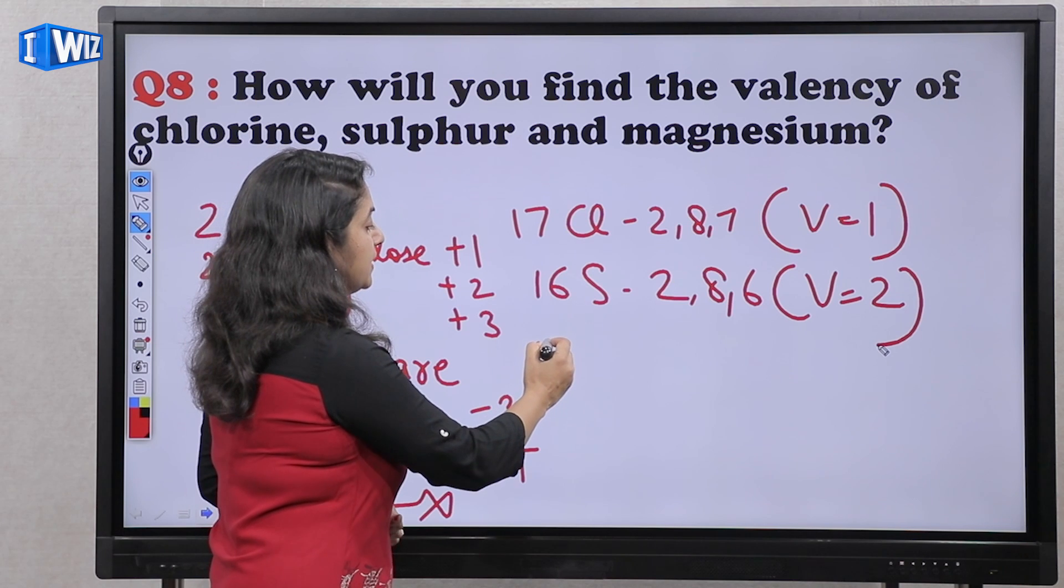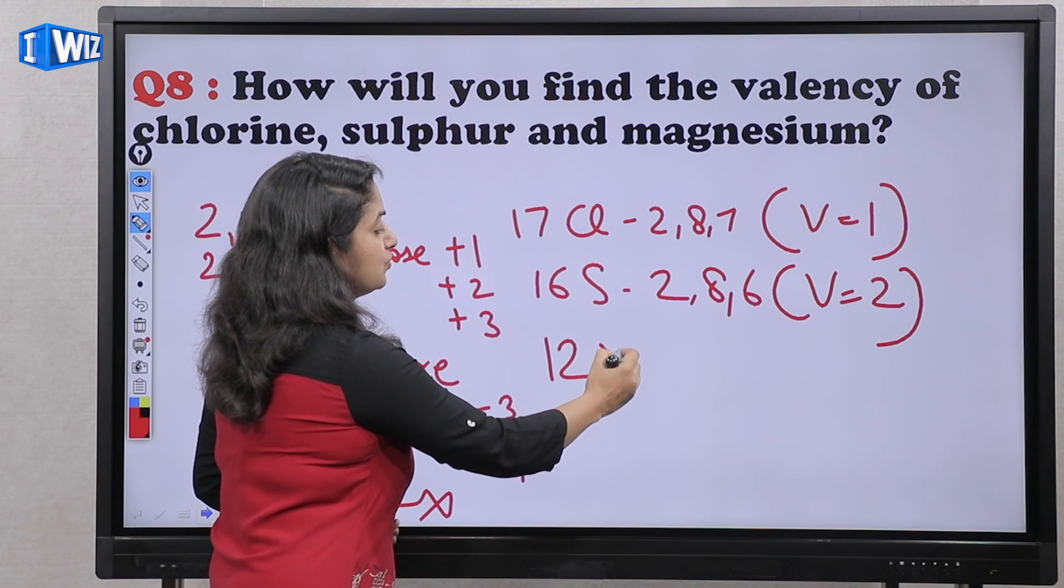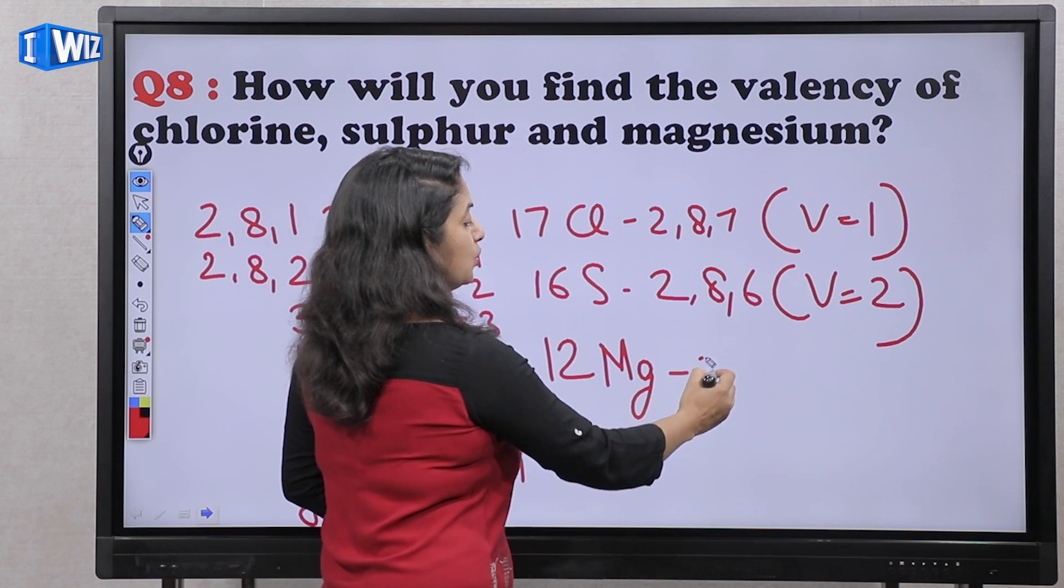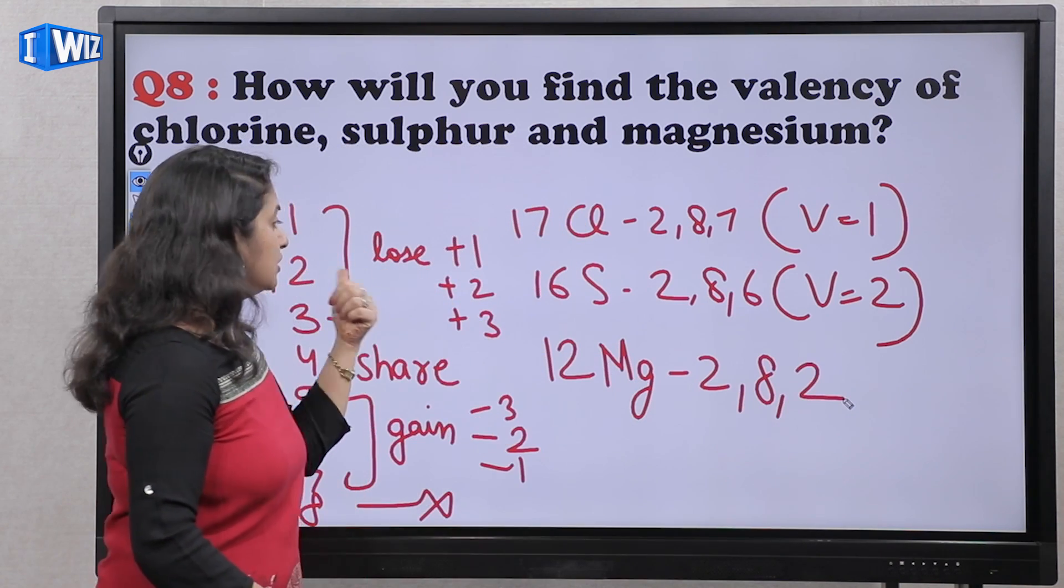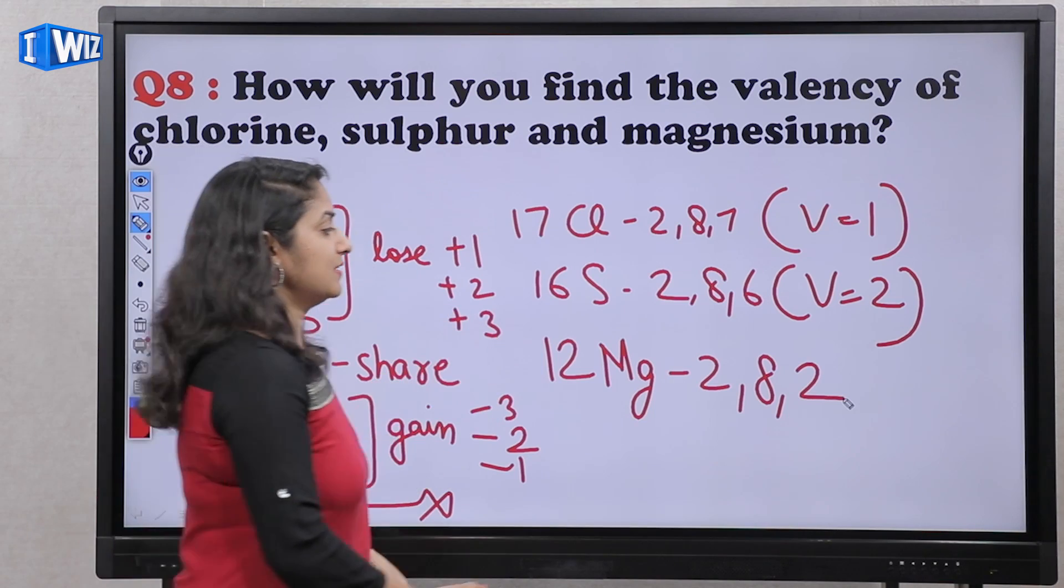And third is magnesium. Magnesium ka atomic number hai twelve. Uski configuration hoogi two, eight, two. Ab isko do electrons lose karne pardengi, or iski valency hui two.